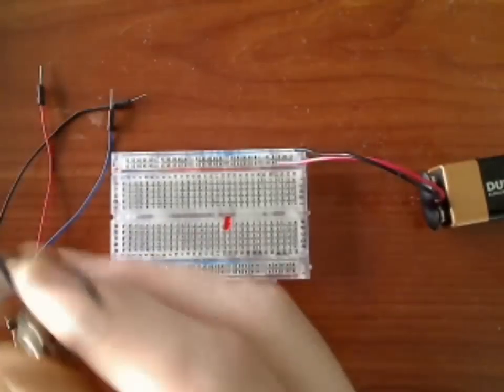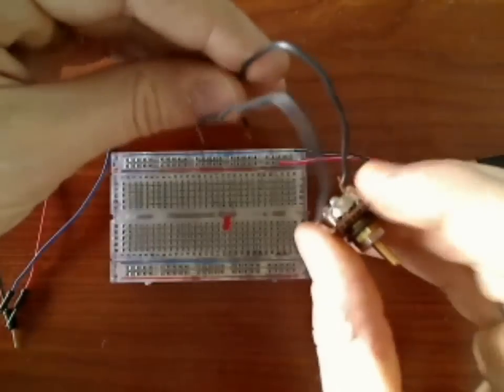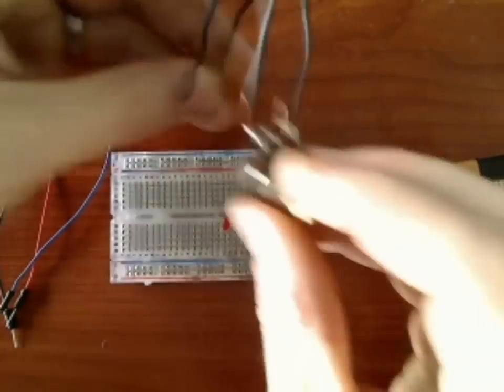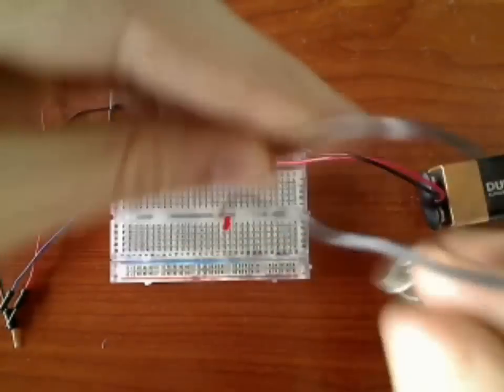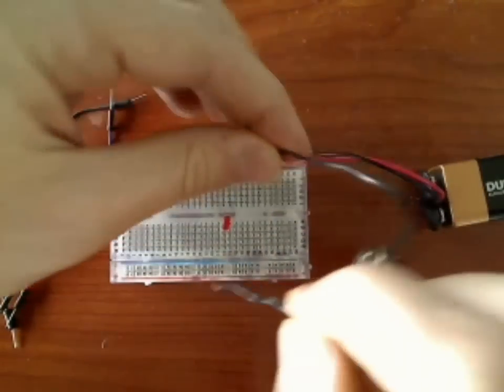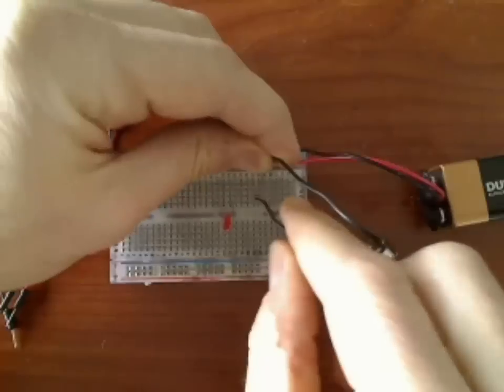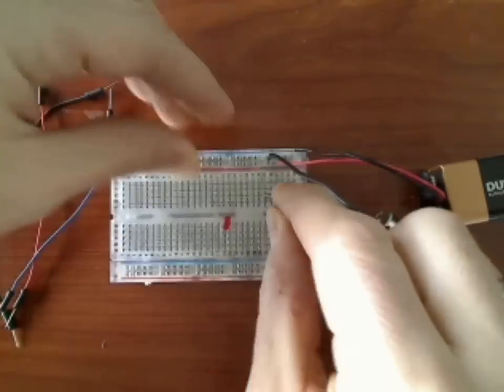But I can't power this with 9 volts. It would be way too much for this LED. It might burn it out. So I'm going to put a trim pot. It's basically an adjustable resistor. I'm going to go right from the high voltage to one of these columns.